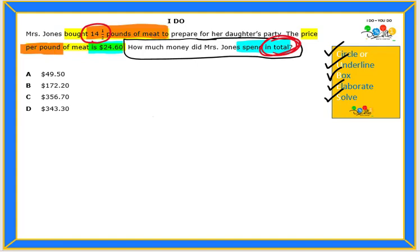14.5 - the .5 represents half. $24.60 times 14.5 pounds.